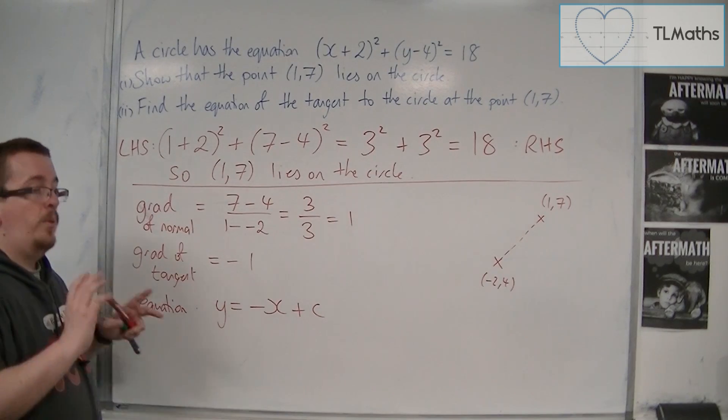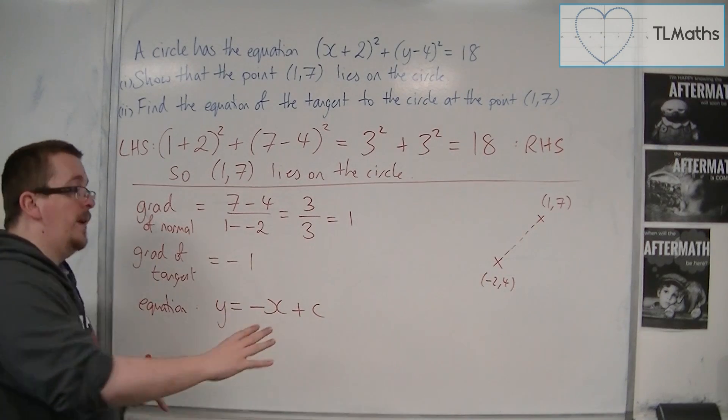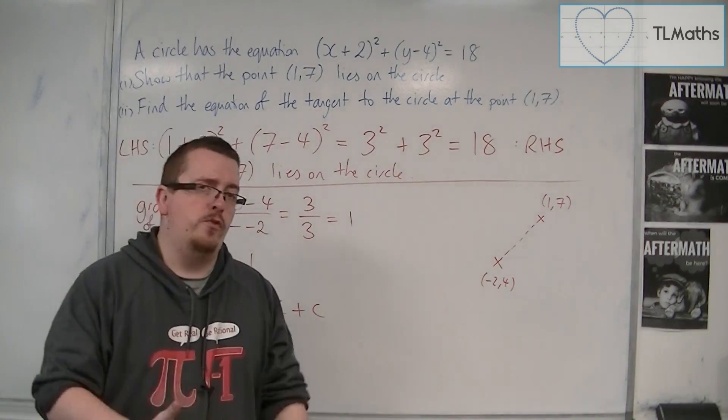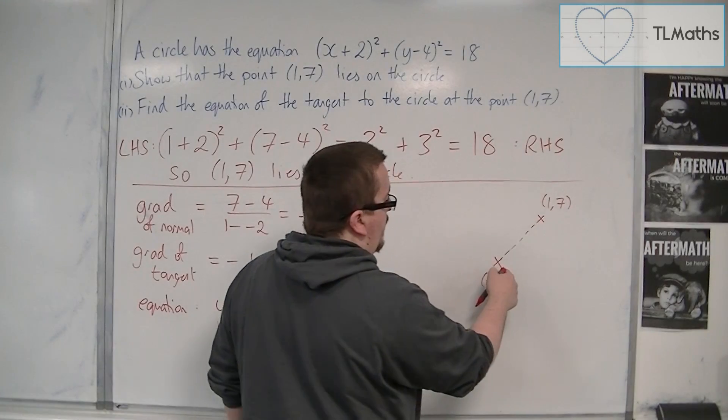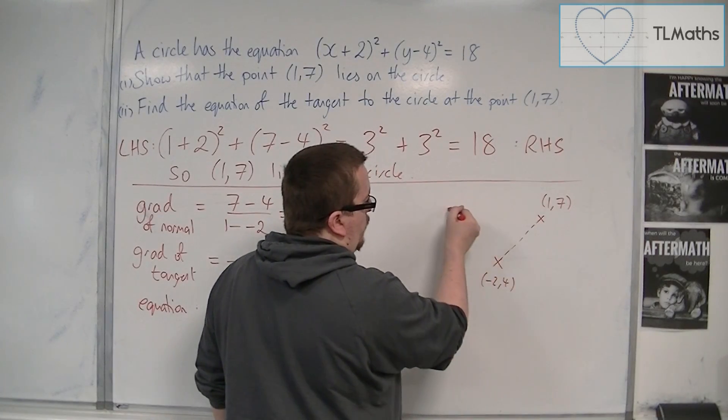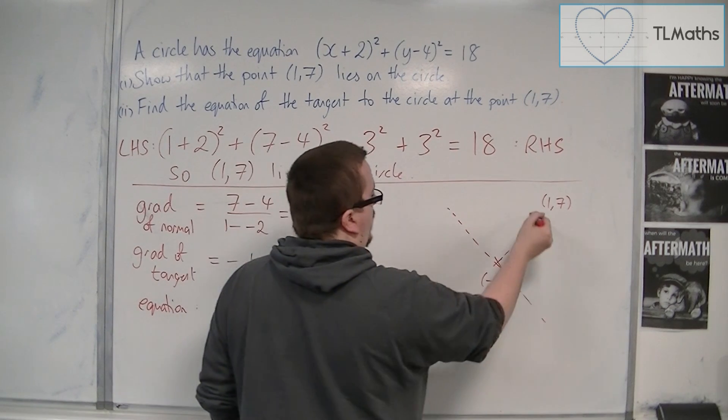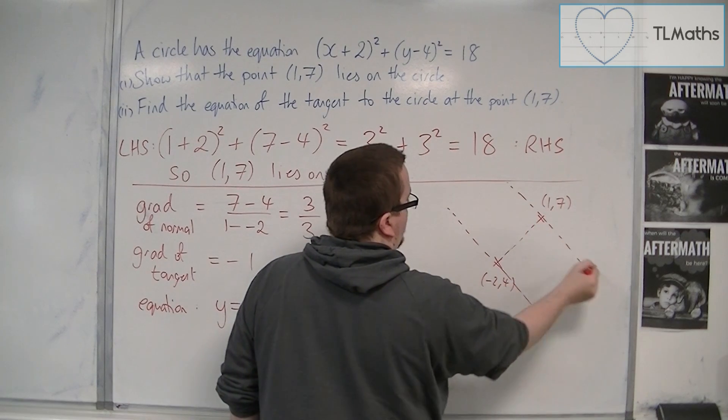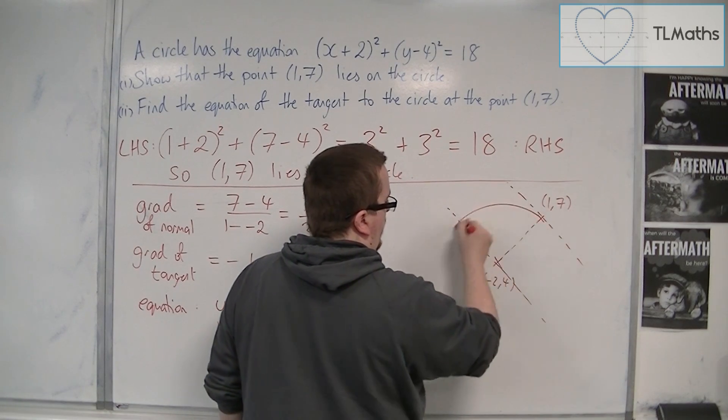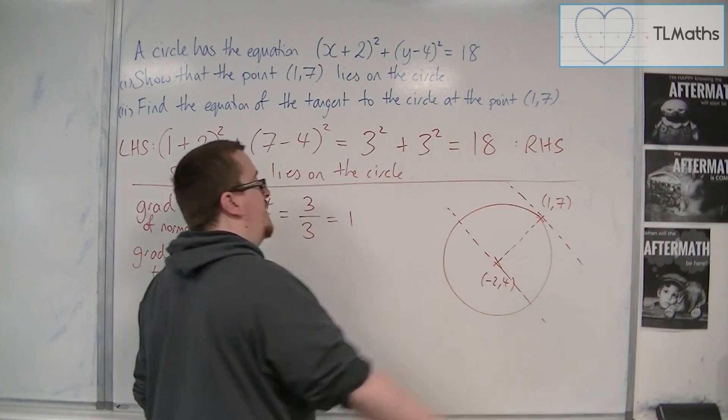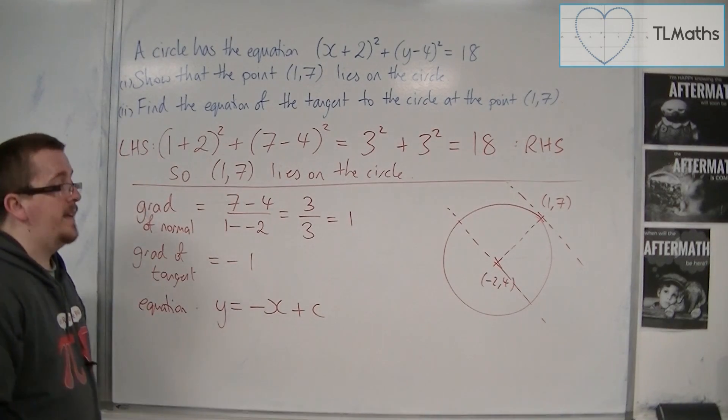Now it is important in order to find that plus c that we substitute in the correct coordinate. We wouldn't substitute in (-2, 4), because that will give me the equation going through (-2, 4). I want the one going through (1, 7), because it is the equation of the tangent at that point that I need.